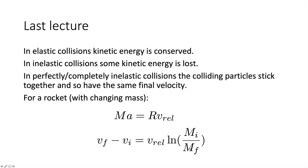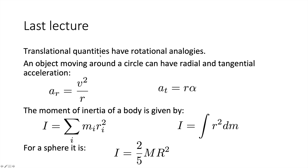Translational quantities have rotational analogies. An object moving around a circle can have radial and tangential acceleration. If an object is speeding up, it has a tangential acceleration calculated using r·alpha, where alpha is the angular acceleration. The moment of inertia is given by the sum of m_i·r_i² for discrete objects, or the integral of r²·dm for continuous bodies. For a sphere, the moment of inertia is 2/5·mr².